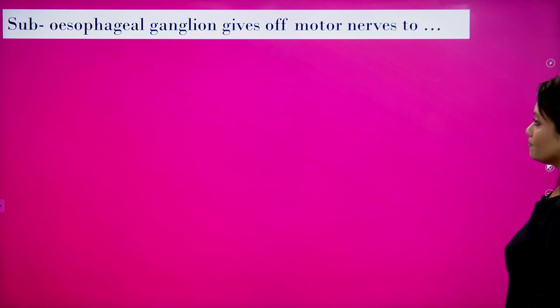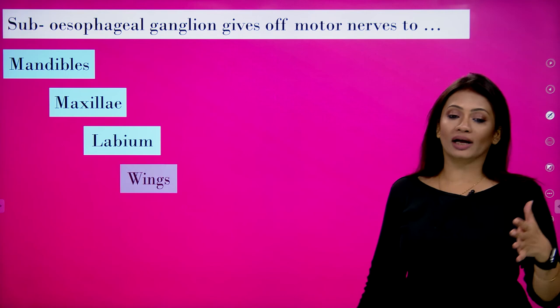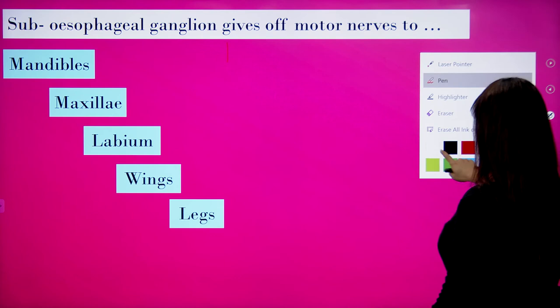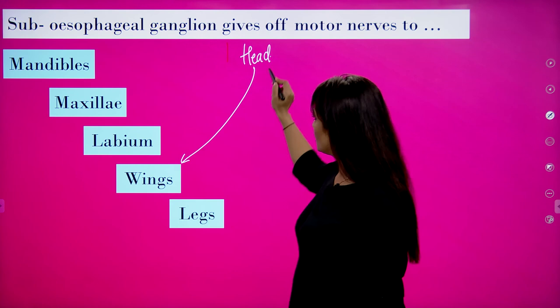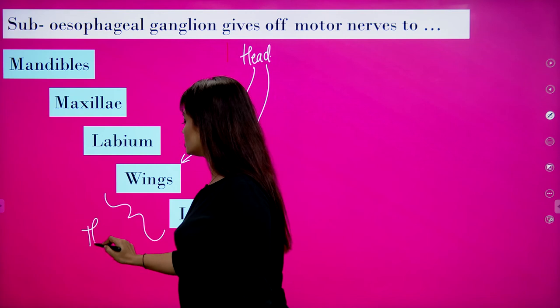The sub-esophageal ganglion gives off motor nerves to the mandible, the maxilla, the labium, the wings and also the legs. Although the ganglion is present in the head region, it gives supply to structures of the head and also to the thorax, since the wings and legs are situated in the thorax of the cockroach.